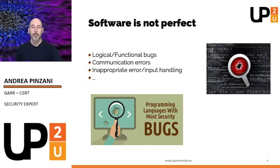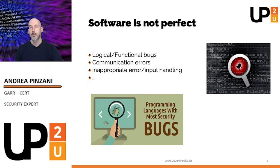It's normal for software and even hardware to have flaws. The more complex a software is, the more likely it is to contain bugs. During software development, functional errors are searched extensively through verification tests. Instead, security bugs are less obvious and are investigated with less care.